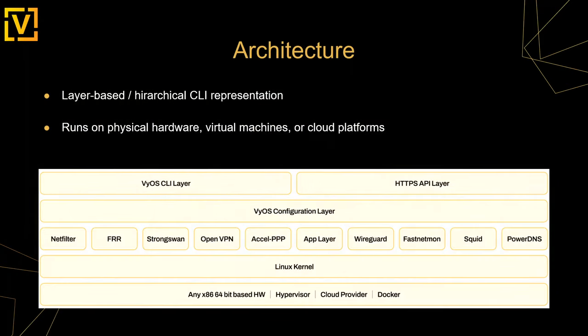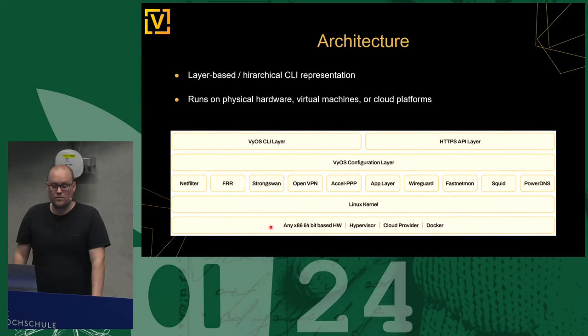From the architecture standpoint, VyOS runs on any x86 hardware or hypervisor — Proxmox, ESXi, XCP-ng, Azure Stack, Google Cloud. We run a recent Linux kernel; the current LTS version is on 6.6.23, the latest bug-fixed stable branch. On top we have all the open-source libraries and daemons we consume: FRR for routing, StrongSwan for VPN, OpenVPN, xl2tpd for L2TP and PPPoE server.